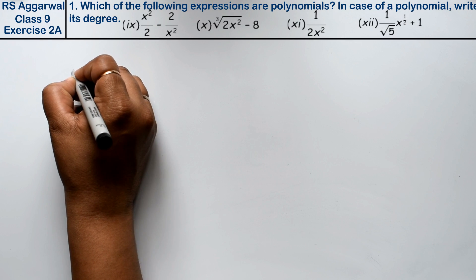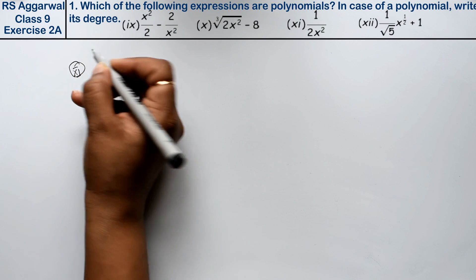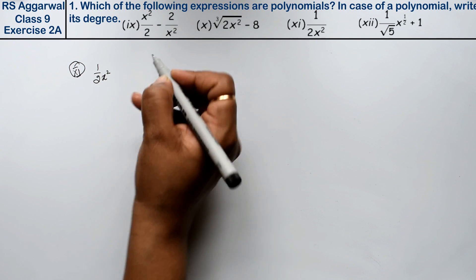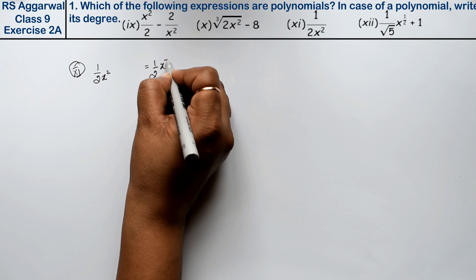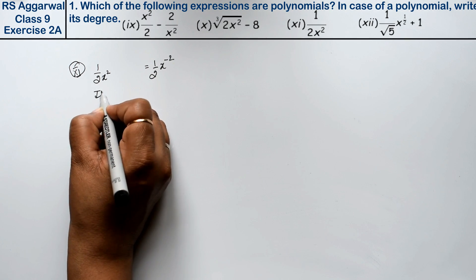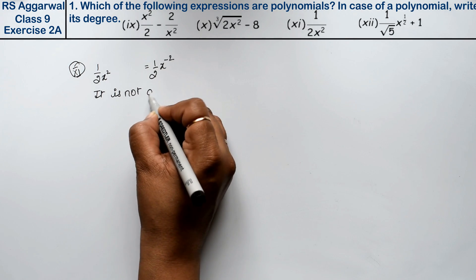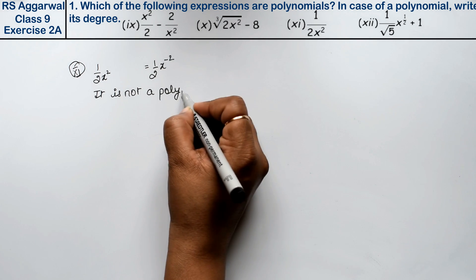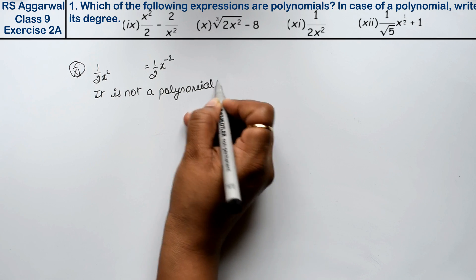Eleventh part is 1/(2x²). We can rewrite this as (1/2)x to the power minus 2. Since the power is negative, hence it is not a polynomial.